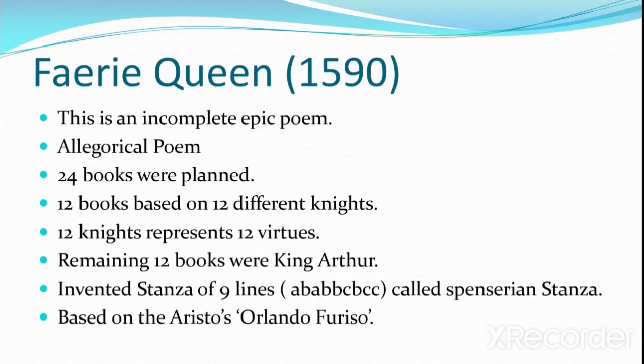Twelve books were planned based on 12 different knights, and these 12 knights were to represent 12 different virtues. The remaining 12 books were planned to portray King Arthur.